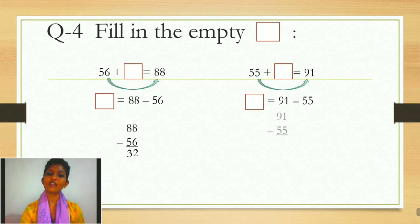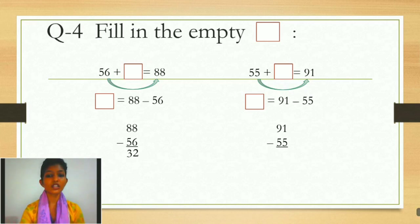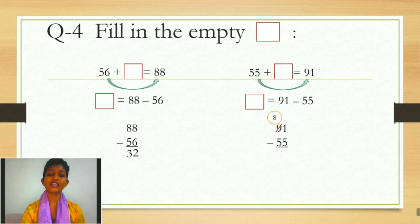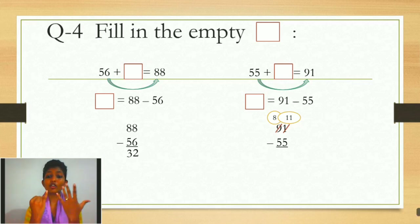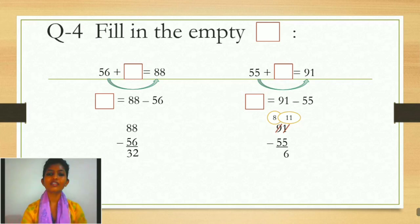Now we have the sum 91 minus 55. This is a carry-and-borrow sum because number 1 is small and 5 is big, so we cannot minus directly. Toh hum borrow lenge — number 9 ke paas se. So number 9 mein se ek number borrow kiya, toh wahan 8 ho jayega. Aur humne 1 ko diya, so yahan pe ho jayega number 11. Now 11 minus 5: counting 1, 2, 3, 4, 5 — we got number 6. So write down number 6. Now 8 minus 5 — 1, 2, 3, 4, 5 — number 3 left. So write down number 3. Answer is 36.